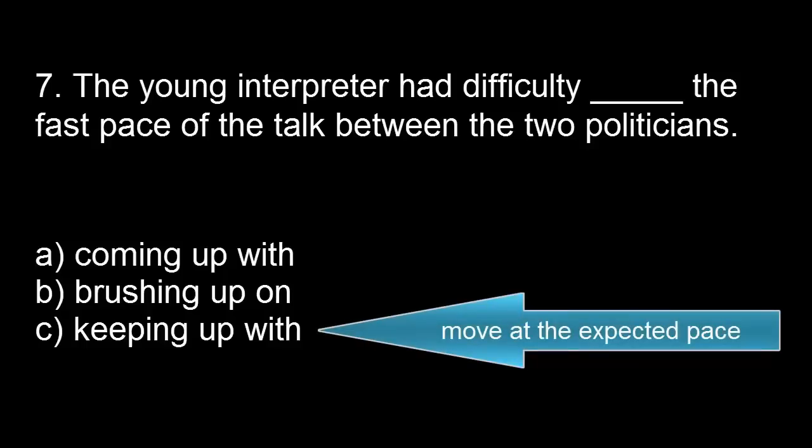Seven. Answer. The young interpreter had difficulty keeping up with the fast pace of the talk between the two politicians.